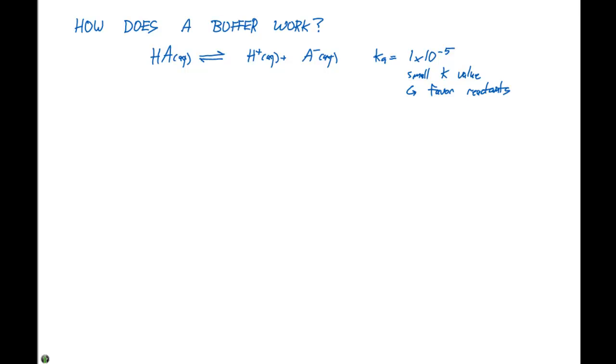Okay, so we're not going very far forward here. Our KA expression can be written as H plus, the concentration of H plus times the concentration of A minus, divided by the concentration of HA.